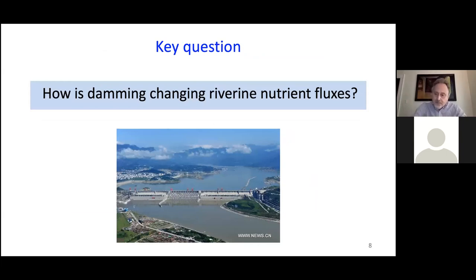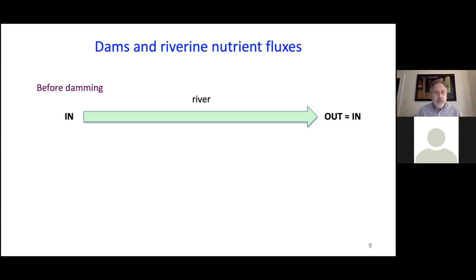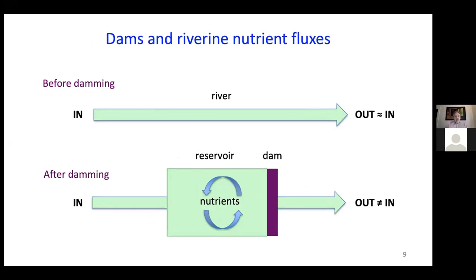The question we are trying to answer is how damming is changing riverine nutrient fluxes. Nutrients are delivered from the landscape into the river and transported from upstream to downstream. When we build a dam, we transform part of the upstream reach into something between a river and a lake. Once the reservoir fills, flow rates decrease, water residence time increases, suspended matter settles, light penetration deepens, algae start growing, they take up nutrients, produce biomass, some settles and gets mineralized. In other words, it sets into motion biogeochemical cycling very similar to what we see in natural lakes.